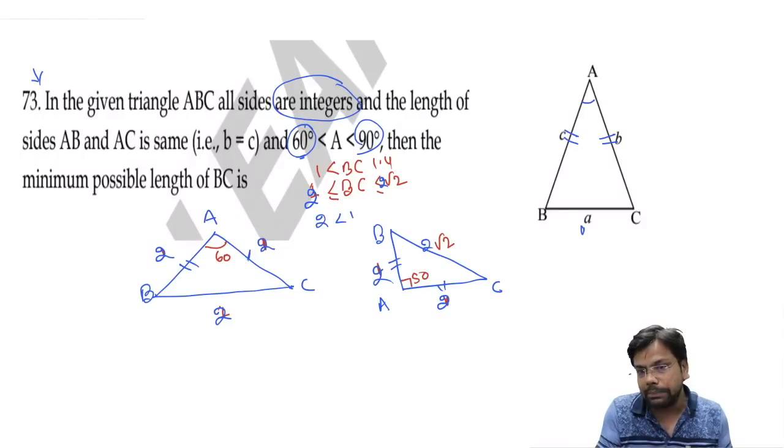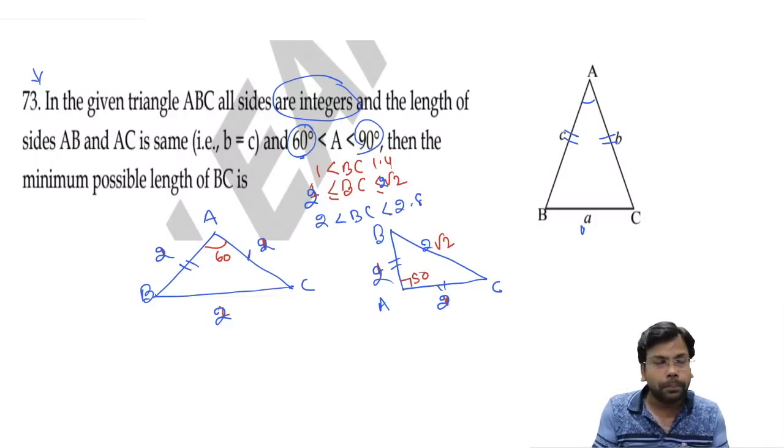So 2 root 2 is 2.8, because root 2 is 1.4, so it's 2.8. So BC is more than 2 but less than 2.8. Again, no integer value will be equal to this, so again BC won't give integer.